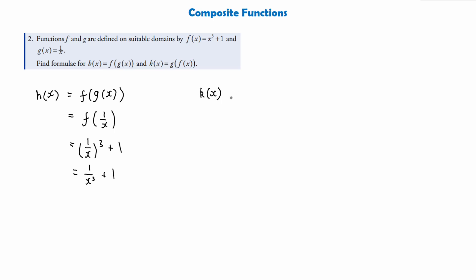Our next function we're asked to work out is k of x. You'll often find that f, g, h, and k are the values used for functions. We know k of x is g of f of x, so this time we're working out the function g of whatever f of x is, which is x cubed plus 1. When we substitute into g, we are simply getting 1 divided by x cubed plus 1, and this is going to be our function for k of x.